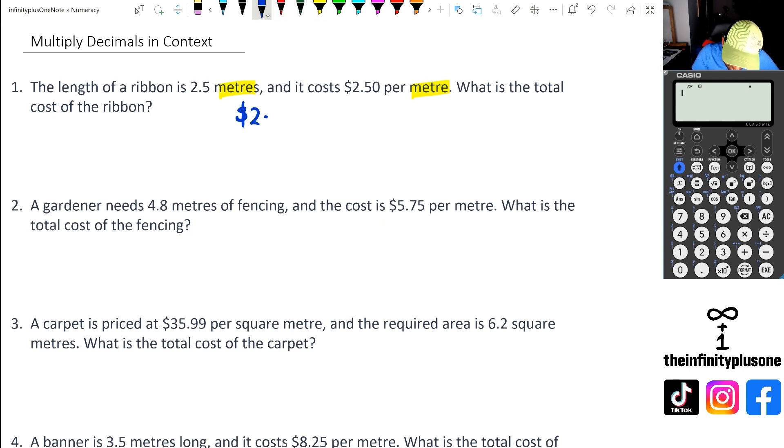So we've got $2.50 multiplied by 2.5 meters. What we've got here is 2.50, that's the $2.50, multiplied by 2.5 meters, and that's going to give us $6.25. So really important that we get the units correctly in this. You want to be putting the dollar sign: $6.25.